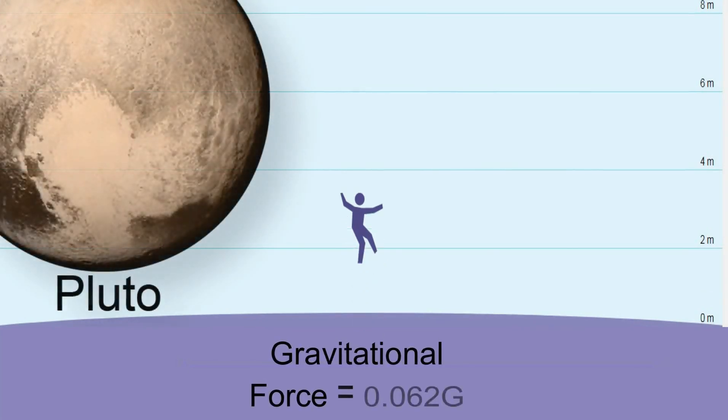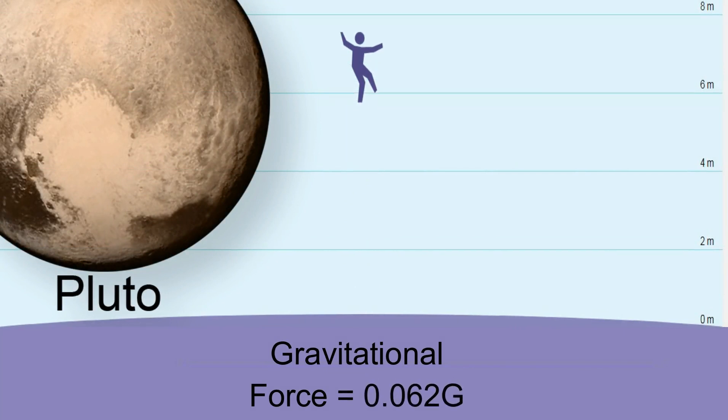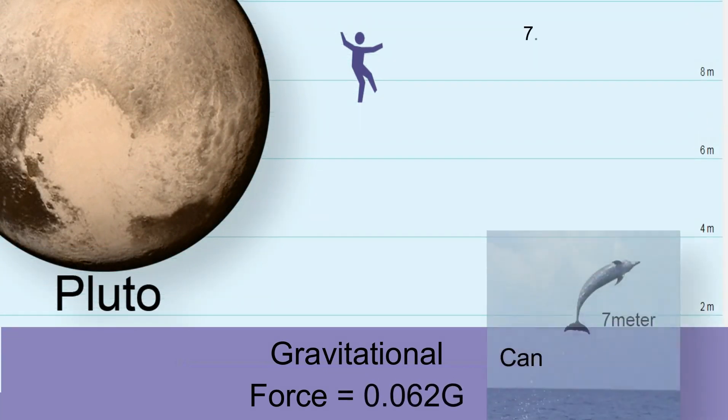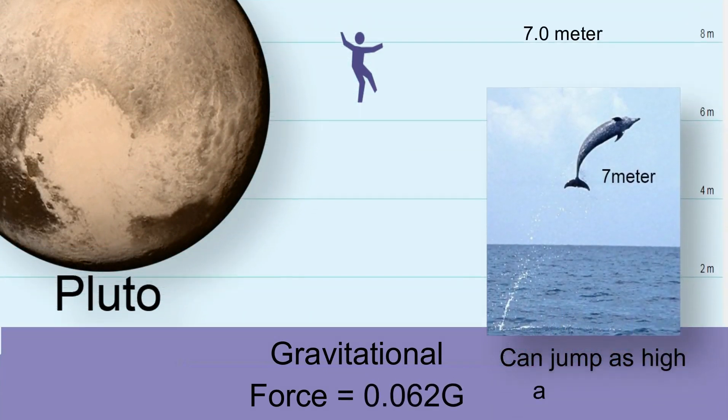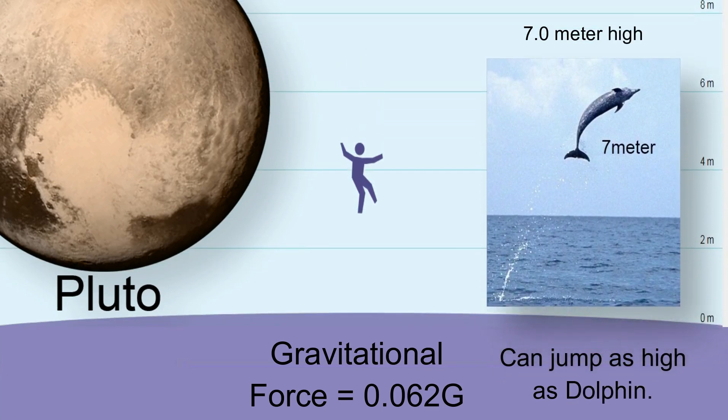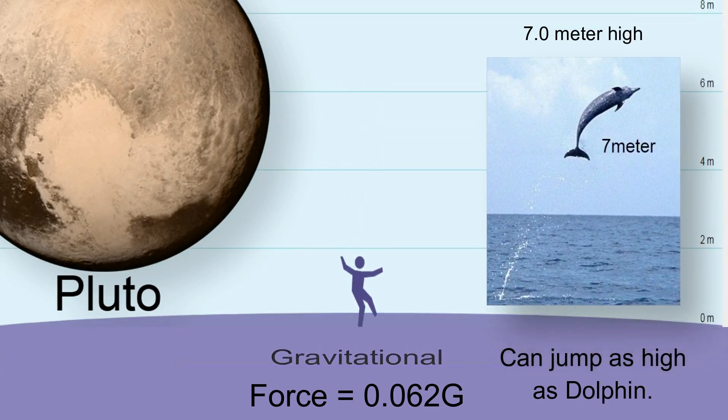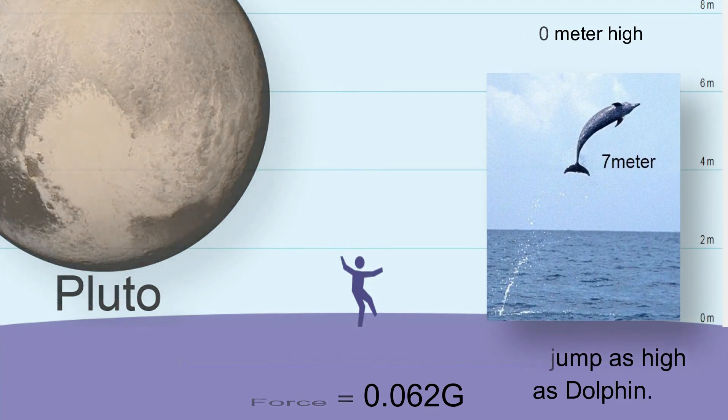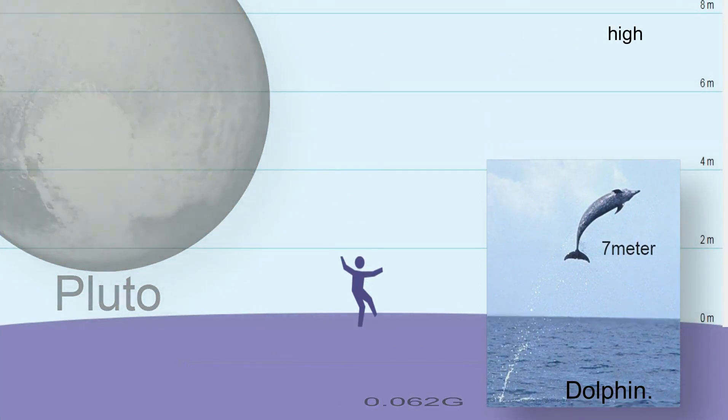Pluto: It is the ninth largest and tenth most massive known object directly orbiting the Sun. The gravitational force on Pluto is 16 times lesser than the Earth. You can jump seven meters high on Pluto, which is as high as a dolphin can jump.